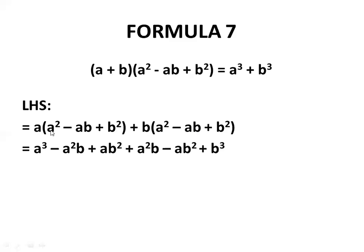a multiplied by a² is a³, a minus ab is minus a²b, a plus b² is ab². Plus b, we can write it as b times a² as well, plus minus ab, minus b multiplied by ab is minus ab², plus plus plus is plus, then b multiplied by b² is b³.